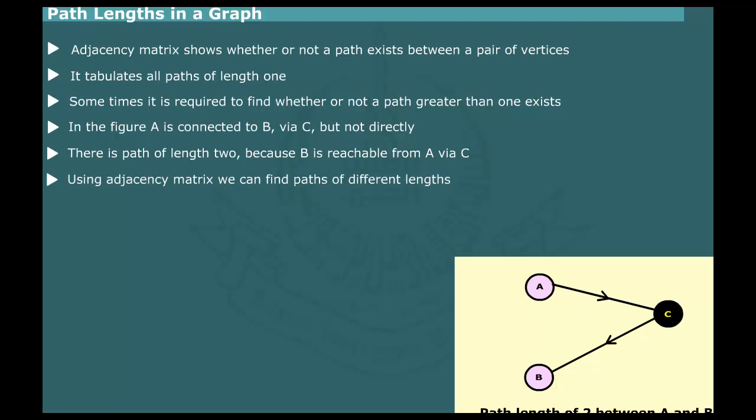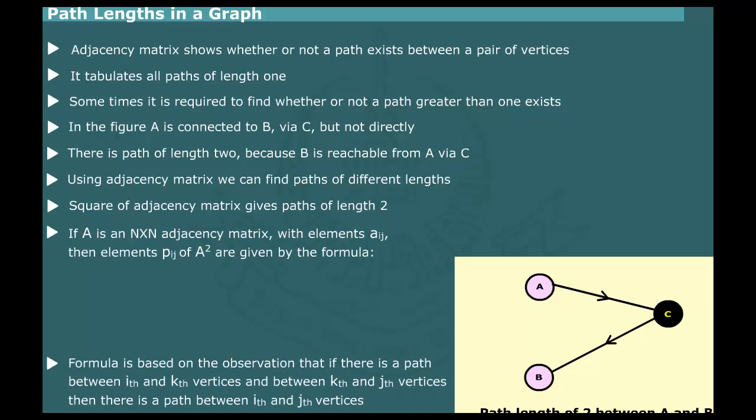Using adjacency matrix, we can find paths of different lengths for a graph. It can be shown that square of the adjacency matrix gives paths of length 2. If A is an adjacency matrix with element Aij in i-th row and j-th column, then the element Bij of A square are given by the following formula for the matrix multiplication, where sigma denotes sum obtained by varying k from 1 to n. Here, n is the number of vertices.